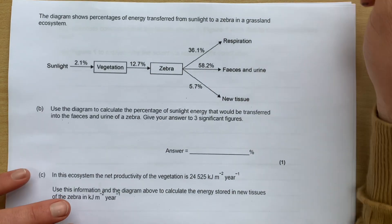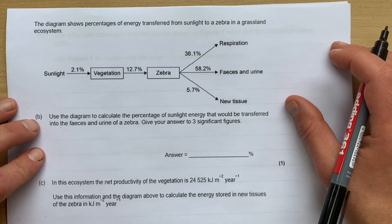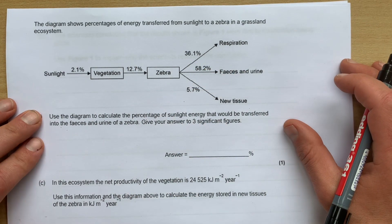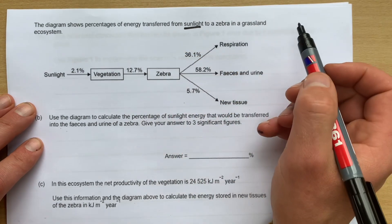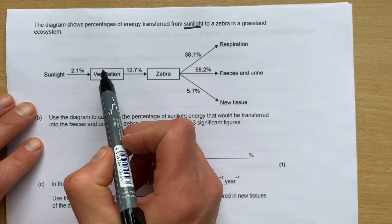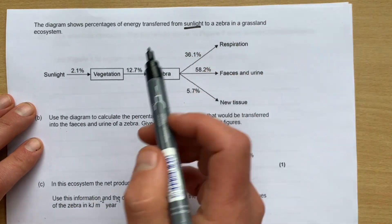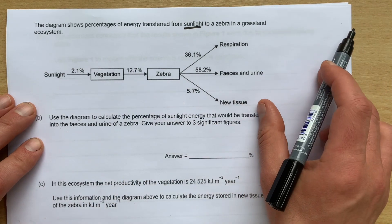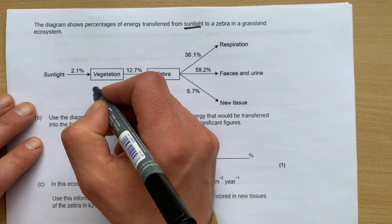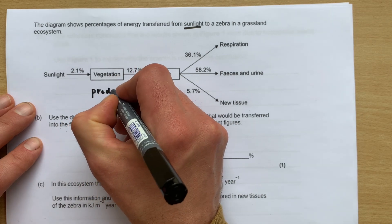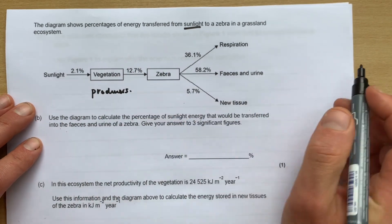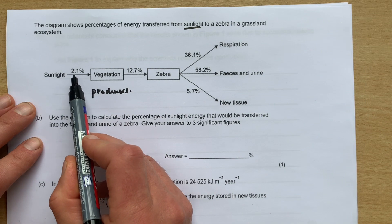Okay guys, we're going to talk about energy transfers here with a typical question. It's going to involve a little bit of maths, so let's just have a quick look at the question. It's talking about sunlight being absorbed partly by the vegetation. Now we know the vegetation is plants and we know plants are producers, so we could just say here the vegetation are producers.